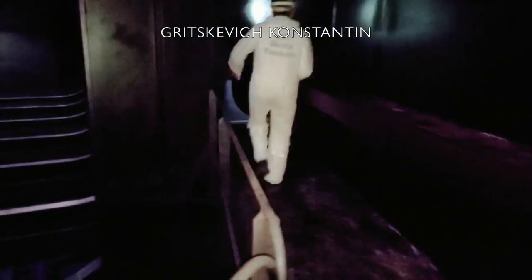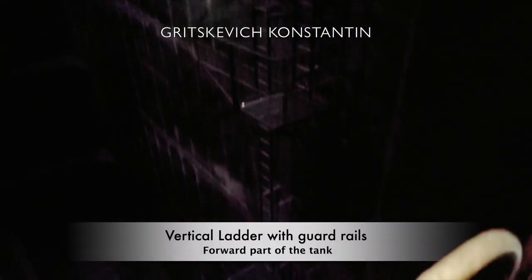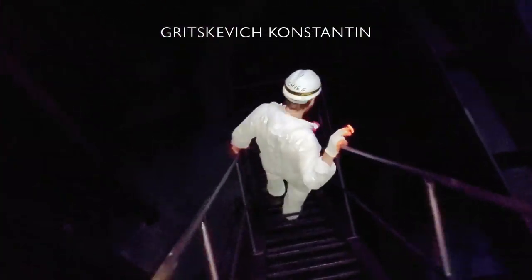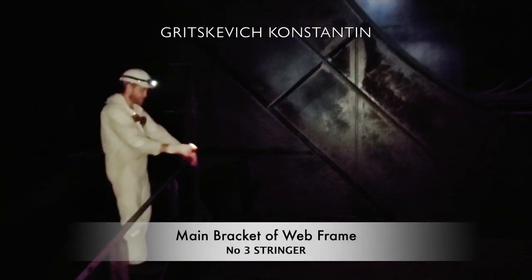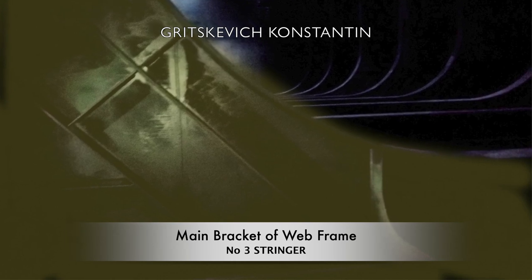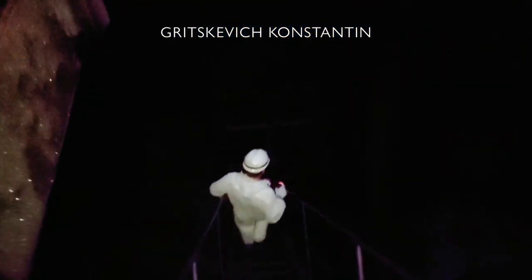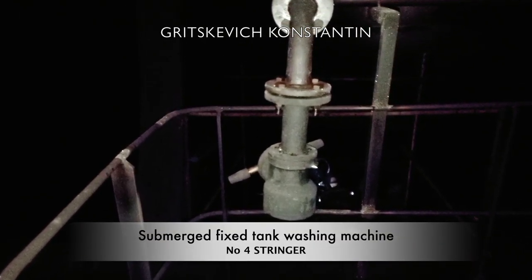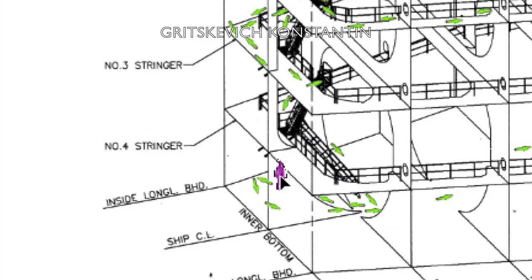Now I am moving down on the second stringer and I will walk across the web frames, which is actually not so easy. Now I am moving down on the third stringer, and near the platform you could see the submerged fixed washing machine. Now I am moving down to the bottom of the tank.